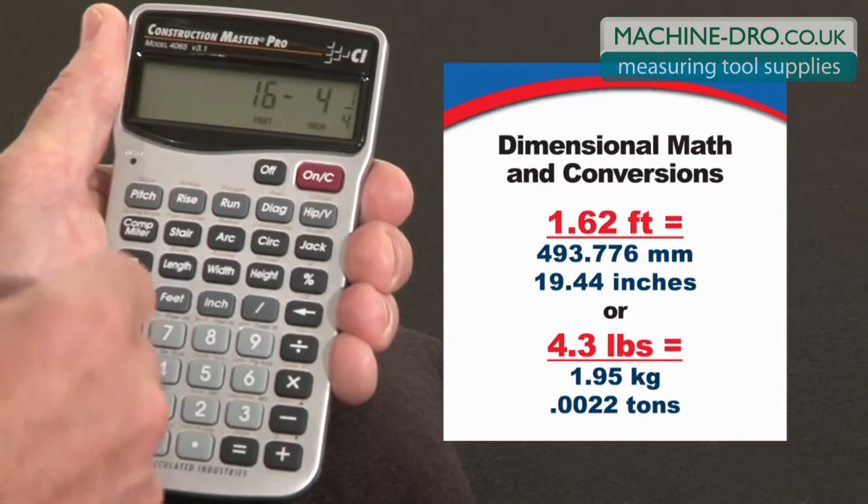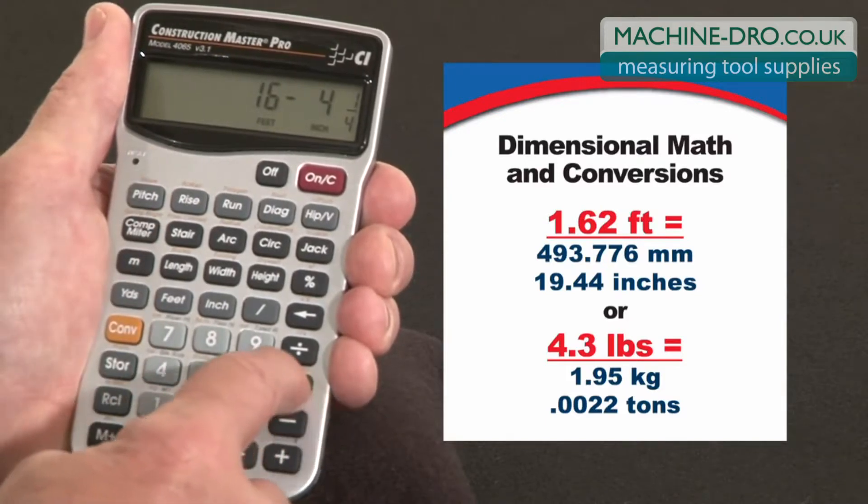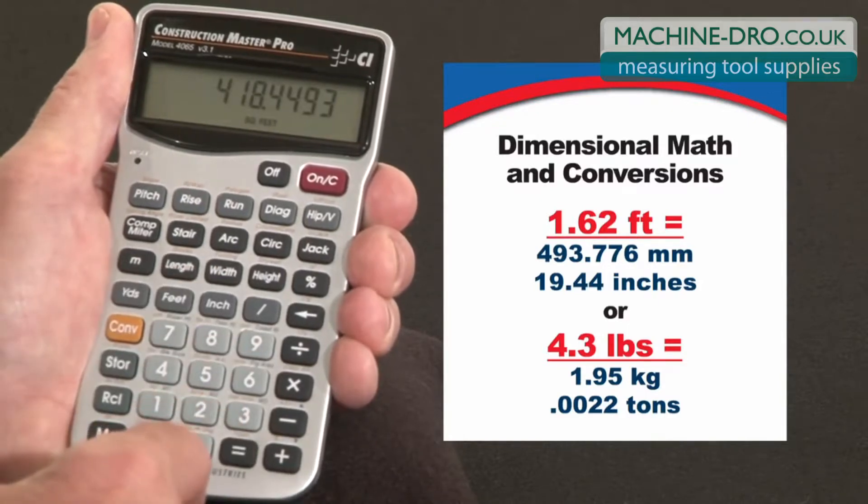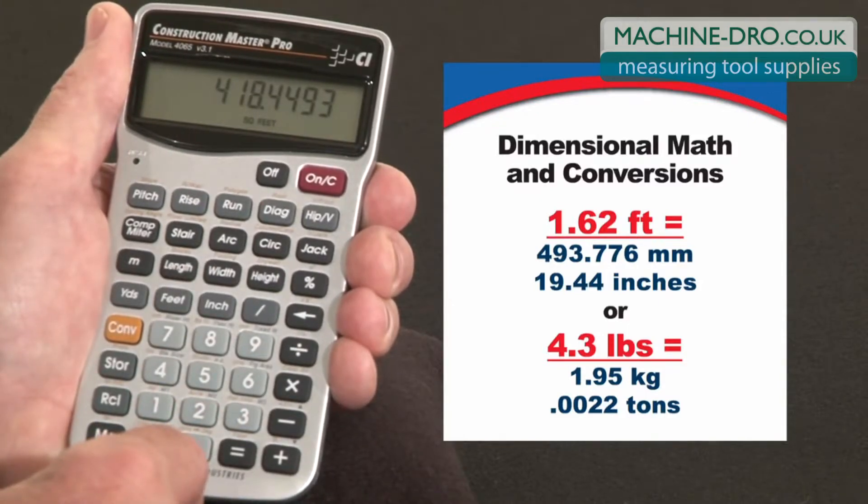Or multiply. Say that's one side of a pad we want to pour. By 25 feet, 7 inches. There's our square footage, square area.